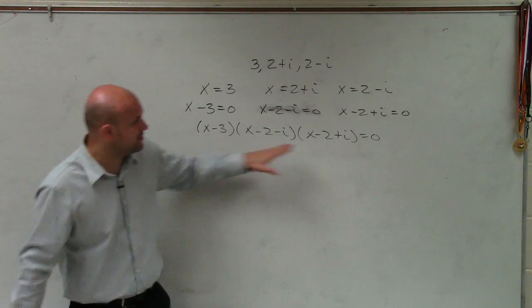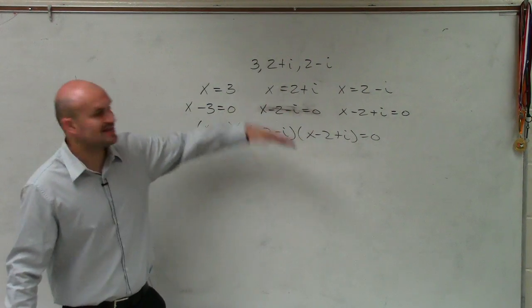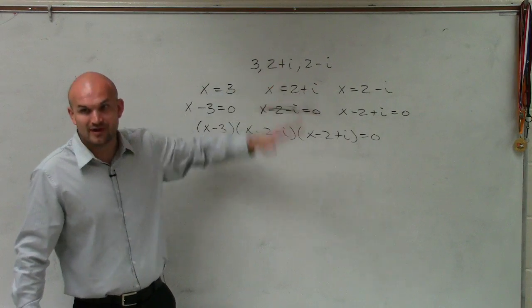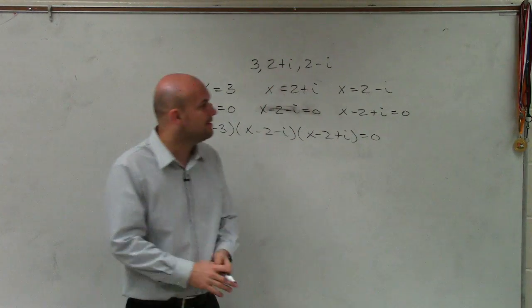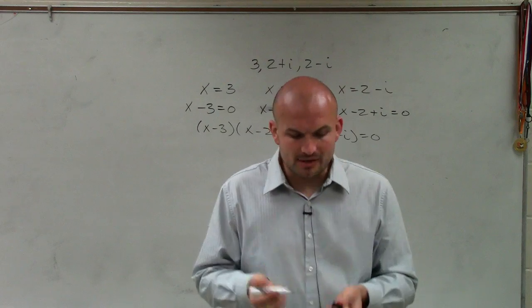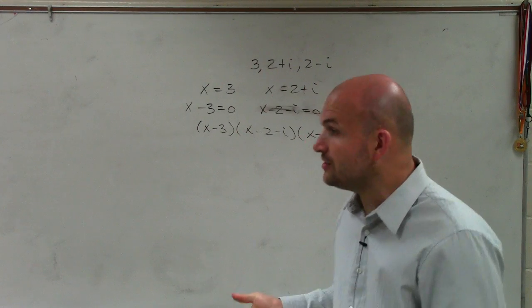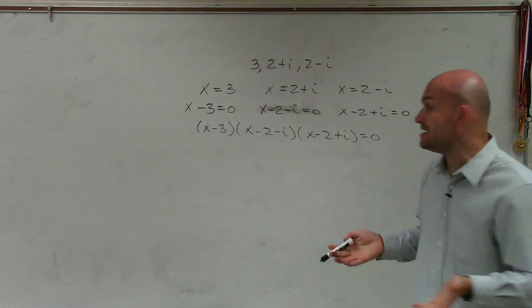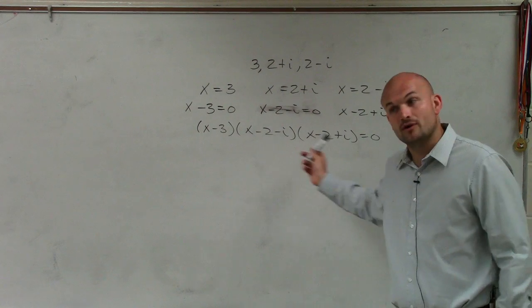If you guys remember, what we used to do is when we had a product equal to zero, we set them all equal to zero, and then we'd solve. So this is just like working backwards. So now comes in the difficult part. If you like multiplying a trinomial times a trinomial, you can definitely go ahead and do this.